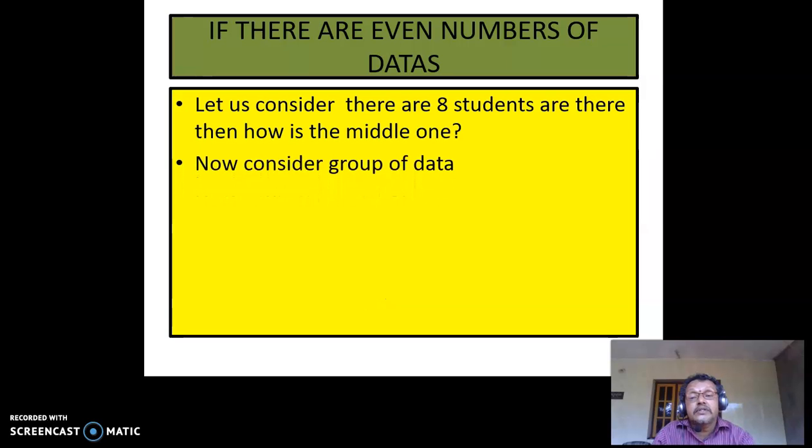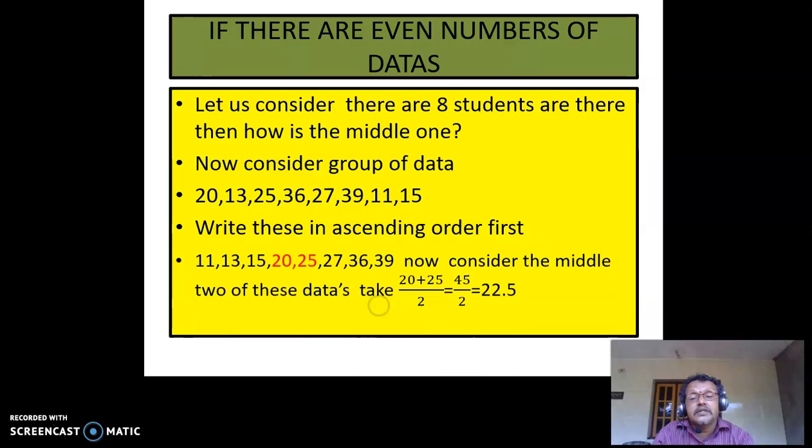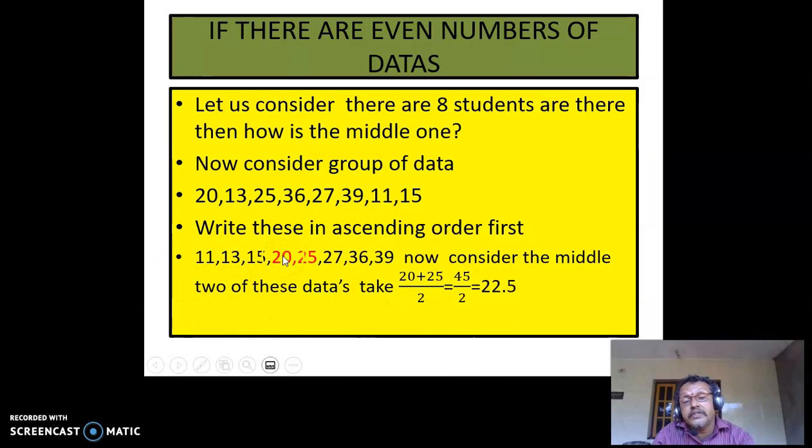Let us consider 8 students: 20, 13, 25, 36, 7, 39, 11, 15. Now arrange in ascending order. After arranging, 20 and 25 are the two middle most scores. Take the average of those two: 20 plus 25 by 2 equals 45 by 2, which is 22.5. So 22.5 is the median.